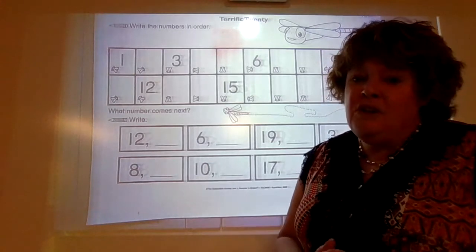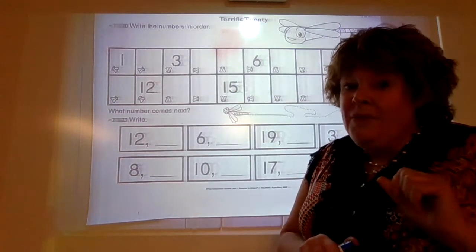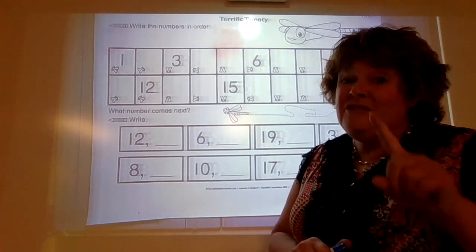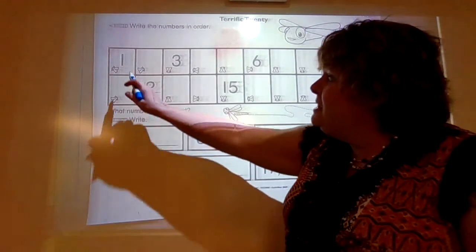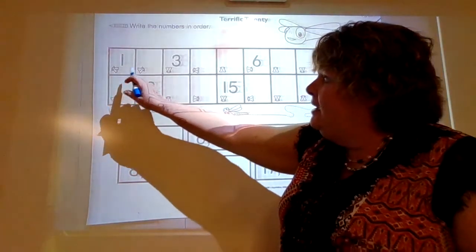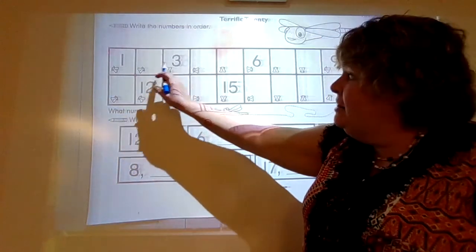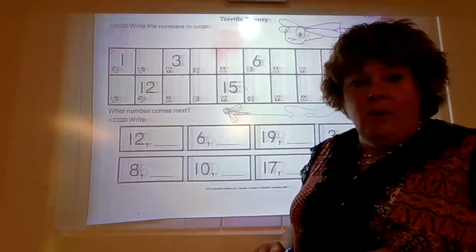So I'm going to do a couple of them with you, and then you're going to have to do the rest of those on your own. So up at the top we have 1, then we have a blank, and then we have 3. What would go in that spot?